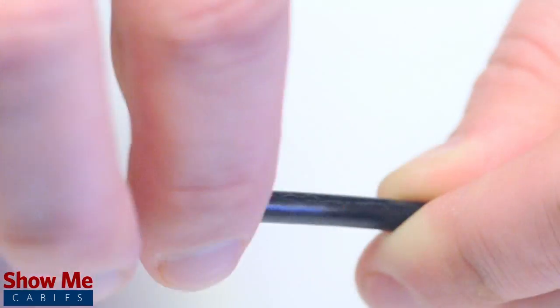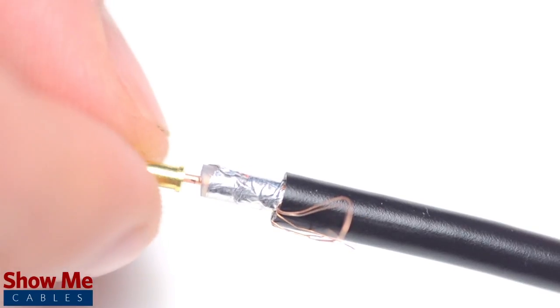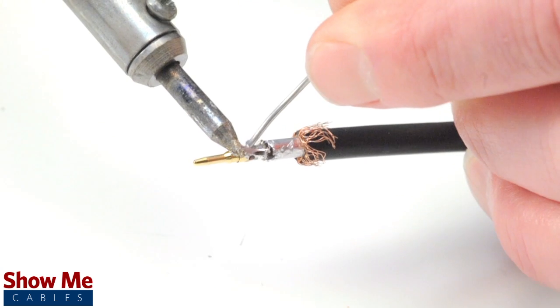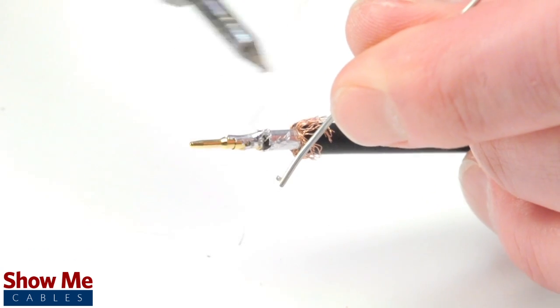Pull back the braided shield and insert the pin onto the center conductor. Solder the pin onto the center conductor and insert the connector housing over the cable.